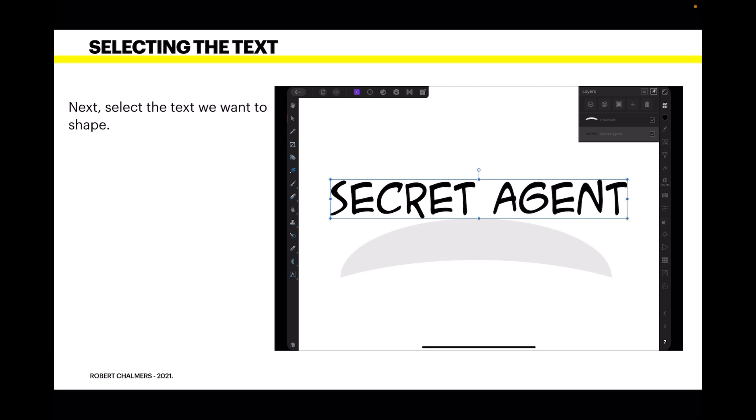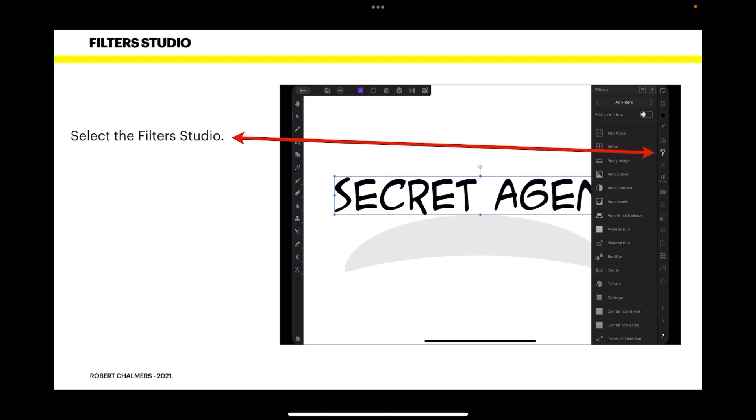Now, select the text, make sure it's selected in the layer panel there you can see, secret agent is entirely selected. Now the next step, select the filters studio, that's the one with a little funnel over the side there. And if you look down that, towards the bottom, one, two, three, four, it's the fifth one from the bottom just there, you'll see deform. Now that's the one we want.